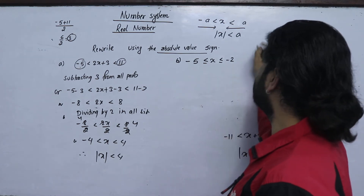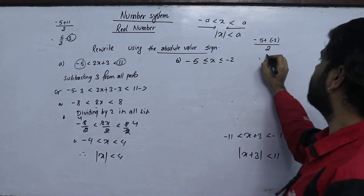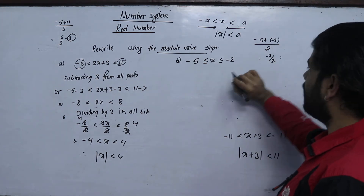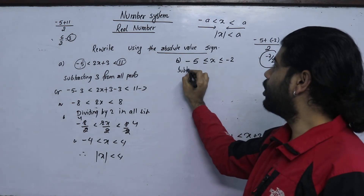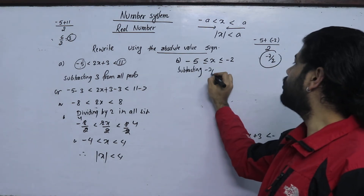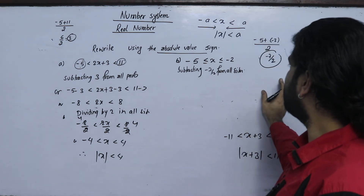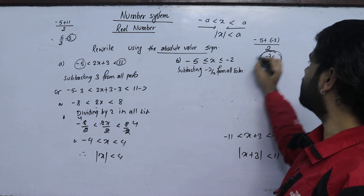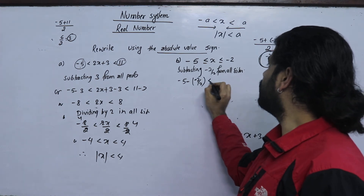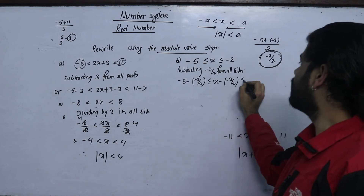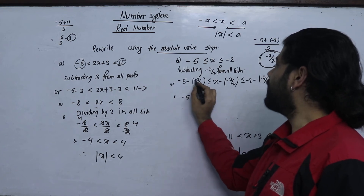Minus 5 minus 2, minus 5 plus minus 2 divided by 2, minus 5 minus 7, minus 2 minus 7, minus 7 by 2 from all sides. Minus 5 minus minus 7 by 2, x minus minus 7 by 2, and minus 2 minus minus 7 by 2. Minus 5 minus minus 7 by 2.